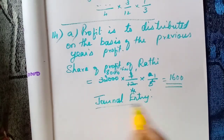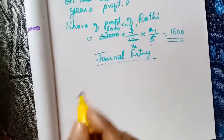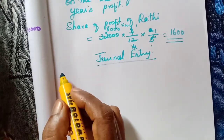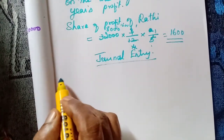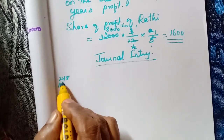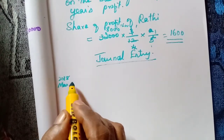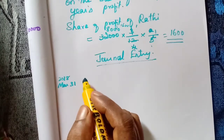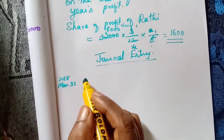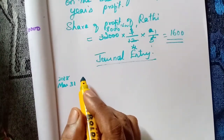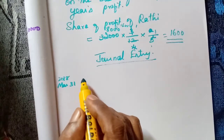Now we need to prepare the journal entry. Draw the columns. Date: 31st March 2018. Entry: profit and loss suspense account debited to Rathi's capital account, 1,600 — Rathi's current year share of profit credited to her capital account.